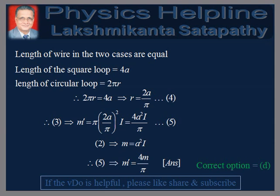Therefore, equation 3 gives M dash = π × (2A/π)² × I, which is equal to 4A²I by Pi. From equation 2, we have M = A²I. Therefore, equation 5 implies M dash = 4M by Pi, which is the answer to the question. Therefore, the correct option is D, which completes the answer to the question.